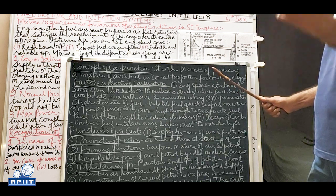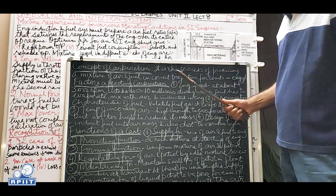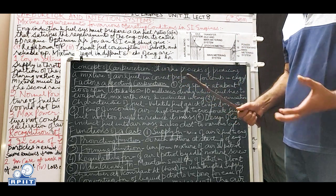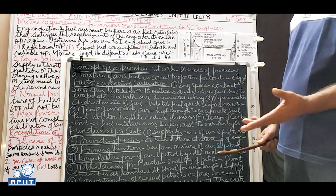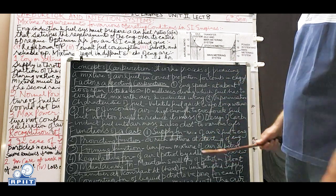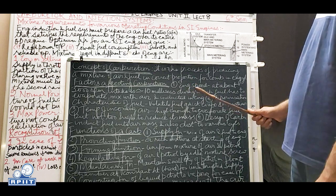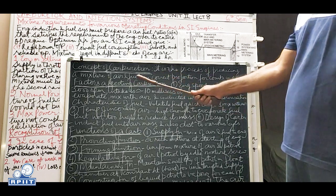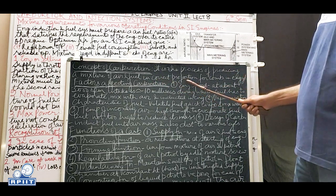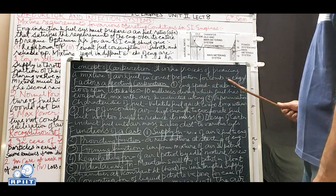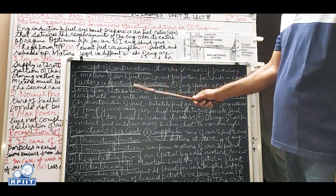Carburetors were fitted in old petrol engines. Today, electronic control modules (ECM) handle fuel metering electronically. Very few engines still use carburetors - mainly small stationary engines used in agriculture and horticulture where speed is generally constant. The function of a carburetor is to produce a mixture of air and fuel in the correct proportion for combustion in the engine cylinder.